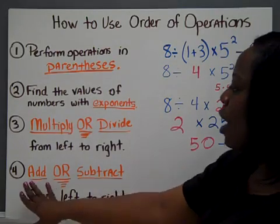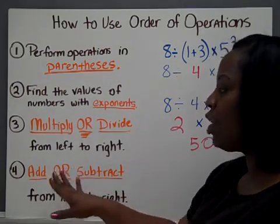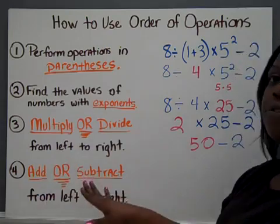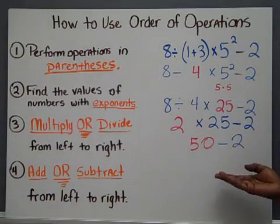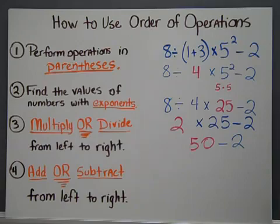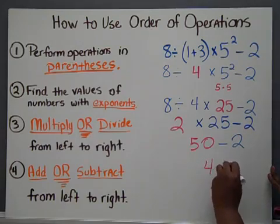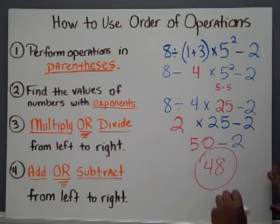Which leads you to step 4. Add or subtract whichever one comes first from left to right. In this example, we only have one operation left, and that is subtraction to give us a solution of 48.